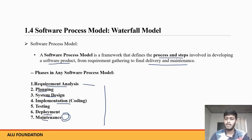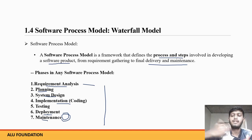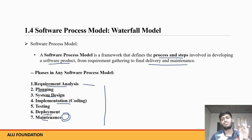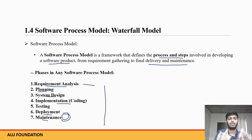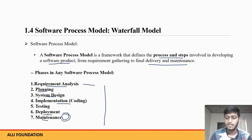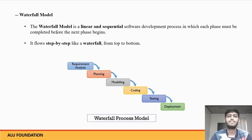Maintenance — once deployment is done, if there is a problem you update it. So these are the phases in the software process model: the process and steps involved. These phases are common. Let's now understand the waterfall model.